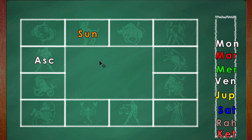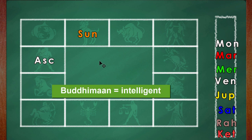If the Sun is in the third house, the native will be brotherless. If the Sun is in the third house, the person would be extremely intelligent, Budhiman.